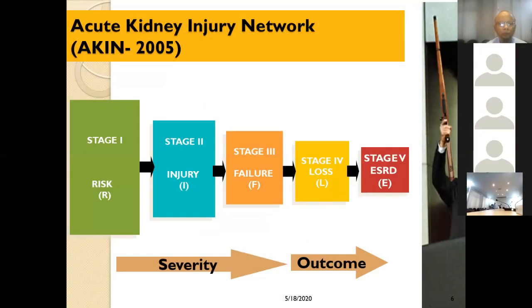The Acute Kidney Injury Network staging system, from the year 2005, goes from stage 1 to stage 5. Stages 1 to 3 denote severity: stage 1 is the risk group, stage 2 is injury, and stage 3 is failure. Stage 4 represents loss of nephrons, and ultimately stage 5 is end-stage renal disease, where patients may need replacement therapy.